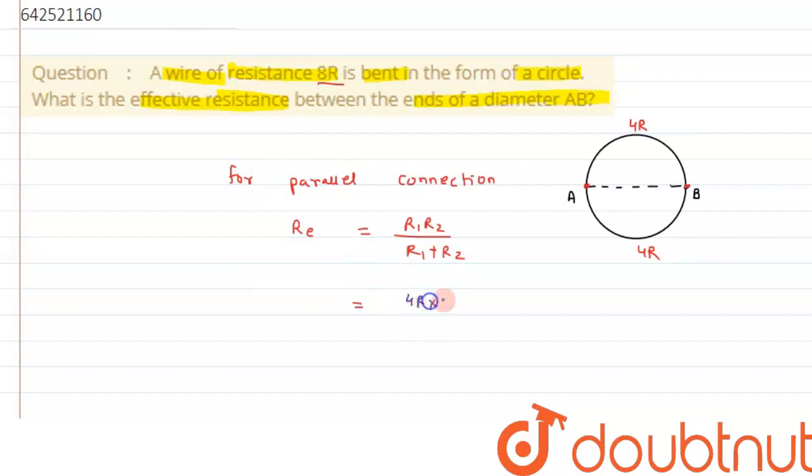R1 has been given as 4R into 4R divided by 4R plus 4R. This gives us the answer as 2R.